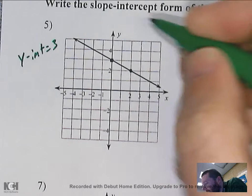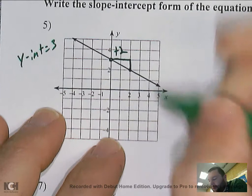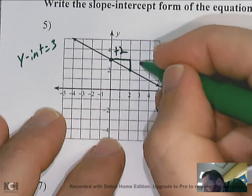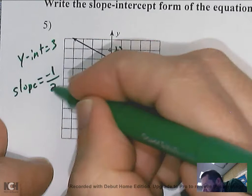To find my slope, I build the stair to go down the ramp and count my rise over my run. My run is going over two — plus two. My rise is going down one — that's a negative direction — so minus one. My slope would be negative one over two.